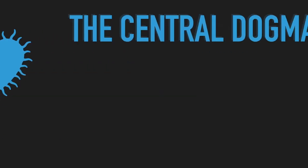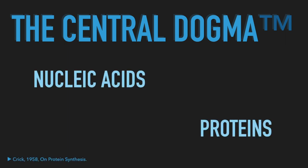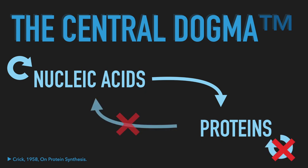Let us begin by bringing up the idea of the central dogma of molecular biology. As originally stated by Francis Crick, the central dogma simply says that information can be transferred from nucleic acids to other nucleic acids and from nucleic acids to proteins, but it cannot be transferred from proteins to proteins or back to nucleic acids. However, a more common interpretation of the central dogma is as follows.